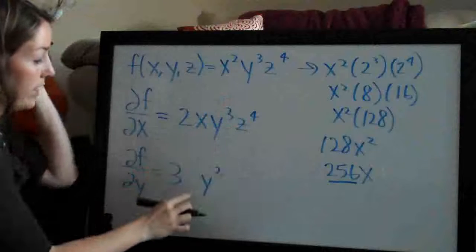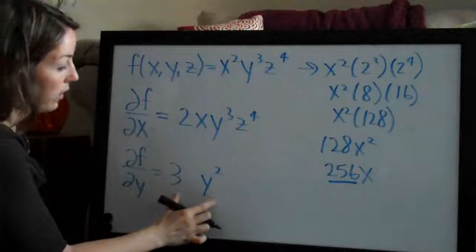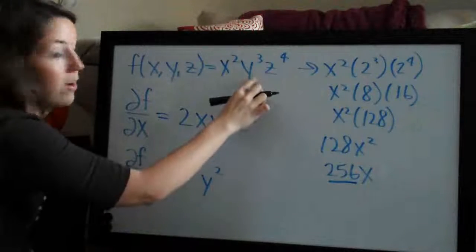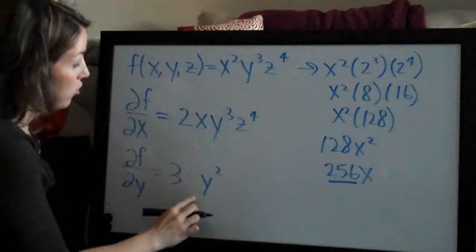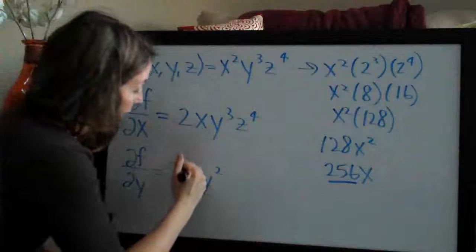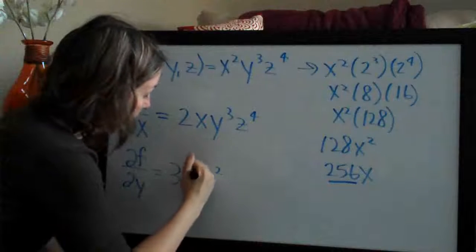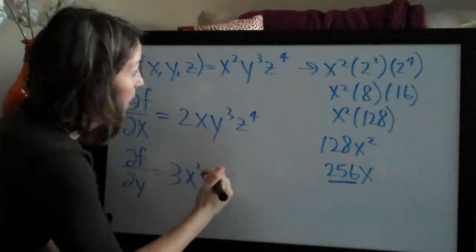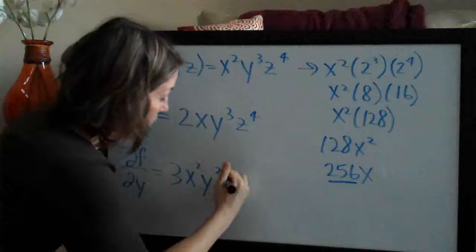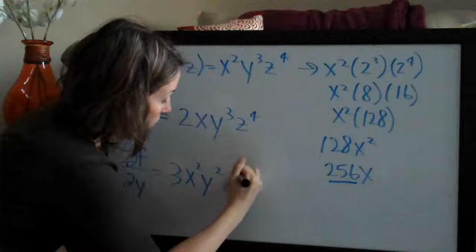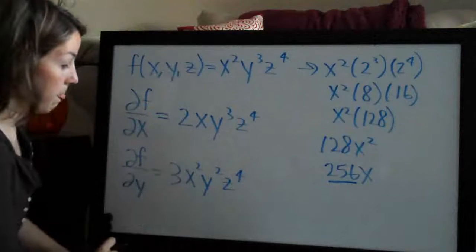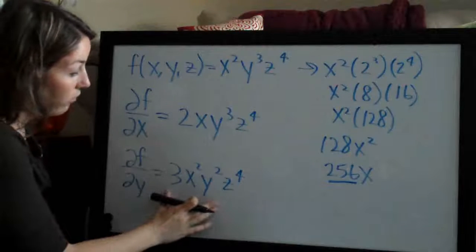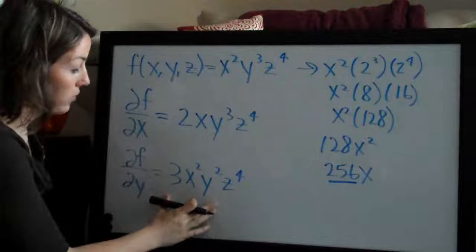Three y squared is the derivative of y cubed. So we took the derivative, and then x squared and z to the fourth are just going to stay. That's the derivative with respect to y.